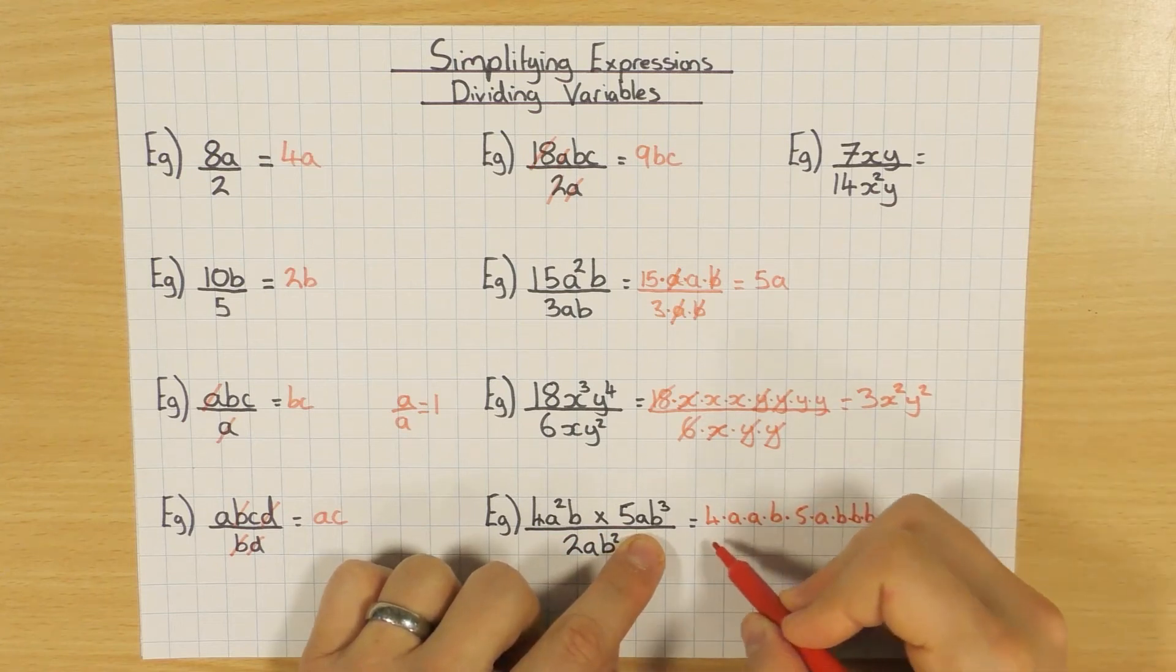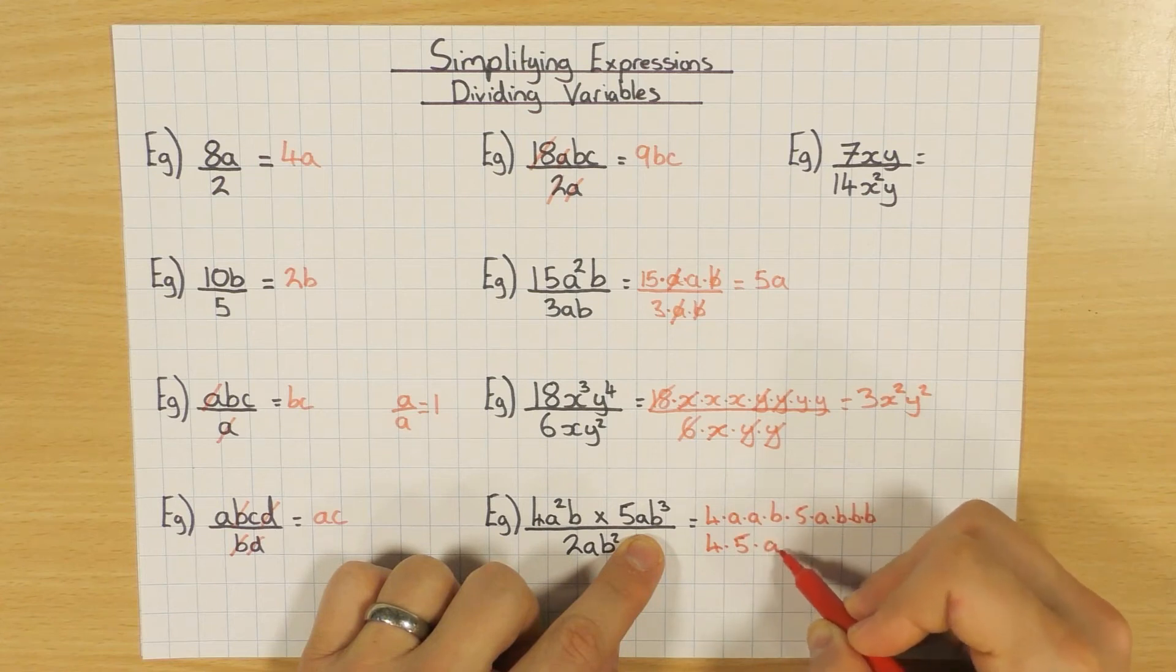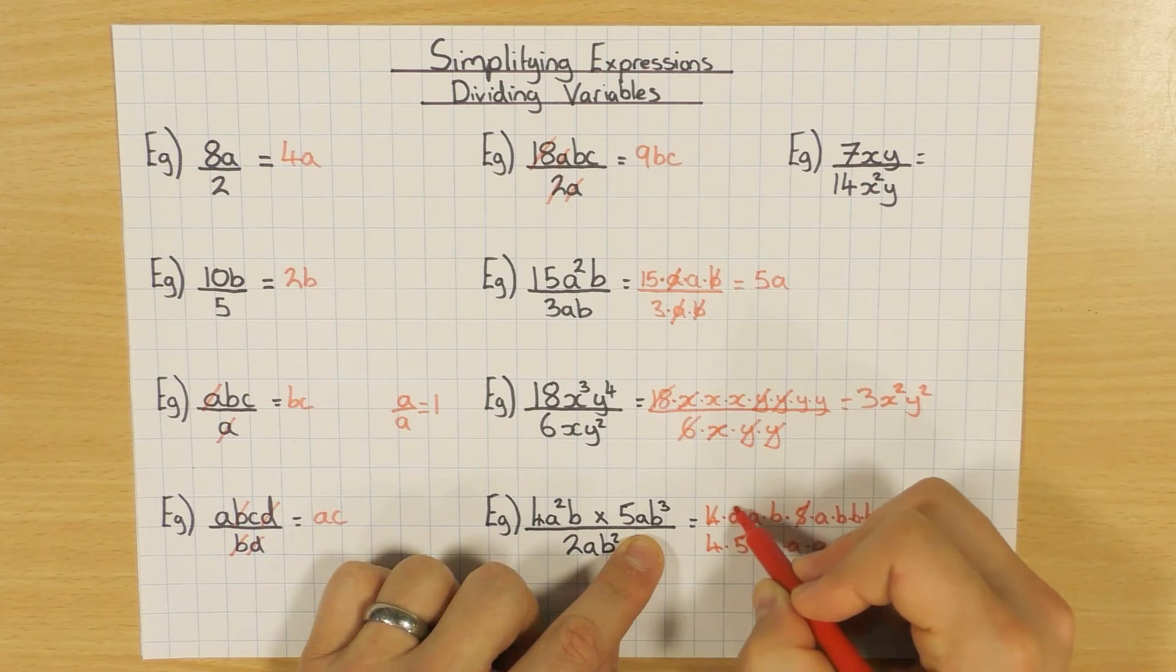So 4 times a times a times b times 5 times a times b times b times b. I'm going to rearrange all the numbers first and letters in alphabetical order. So 4 times 5 times a times a. So I've got the 4, I've got the 5, I've got 2 a's, and that a, and I'm left with 4 b's.